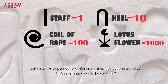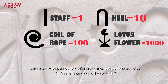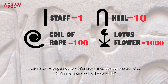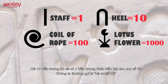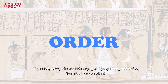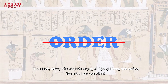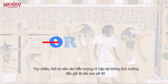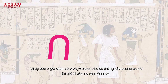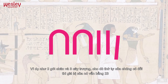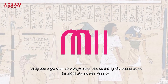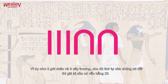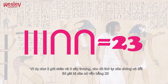Ten of one symbol could be replaced by one of another symbol — we call this a base-10 system. However, the order in which the symbols were written down did not affect the value of the numerals. For example, two heels and three staffs — no matter how the order changes, it is still the same value of 23.